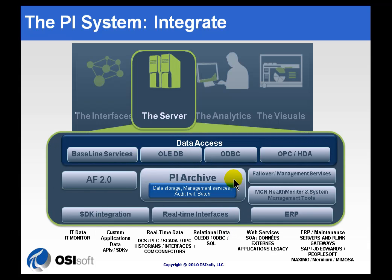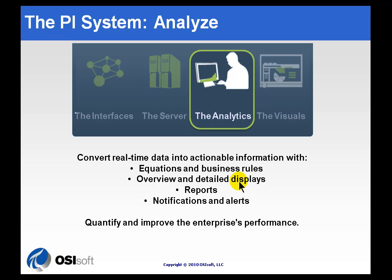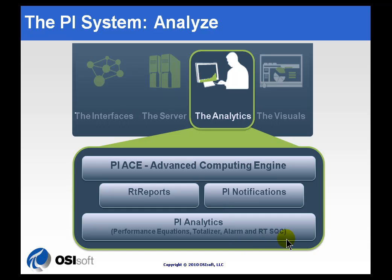All of these would be things we'd categorize as part of our PI Archive — that's what we're calling the server. The analytics portion covers the calculations we do, like performance equations for inventory management or yield accounting. We have both performance equations and ACE, our Advanced Computing Engine, for equation-based calculations. We can also do reporting and notifications through email based on certain criteria — for example, if X goes above 50, send an email and escalate to two or three people until we get an acknowledgement. We also support real-time statistical quality control as well as a simple alarming PI point type.